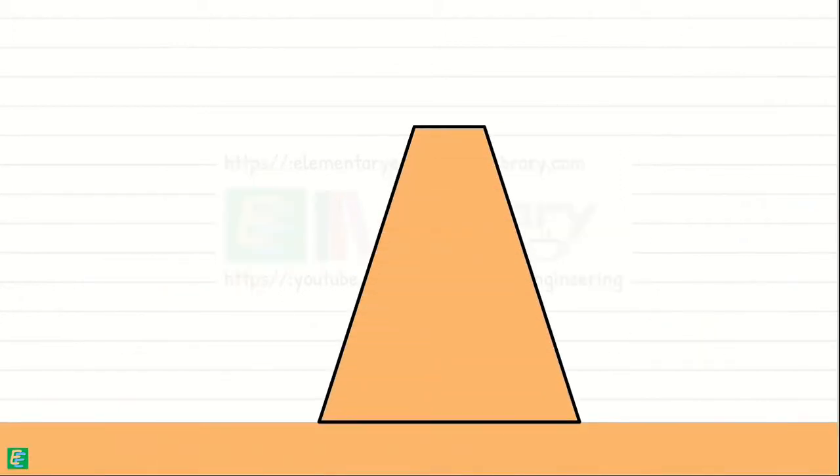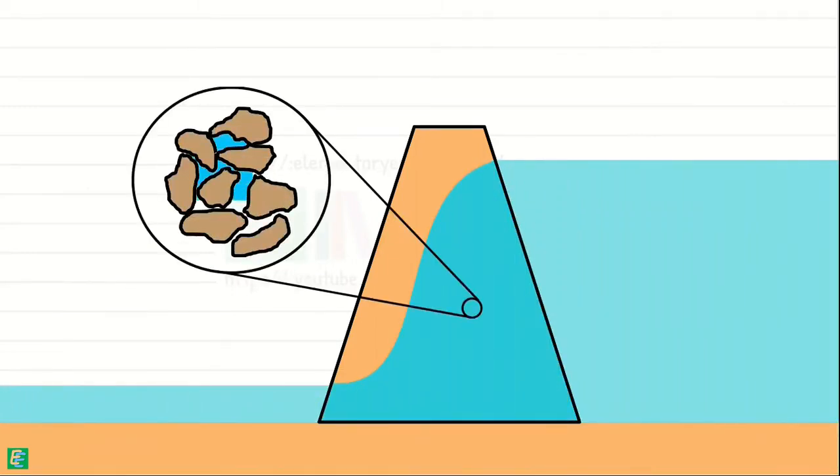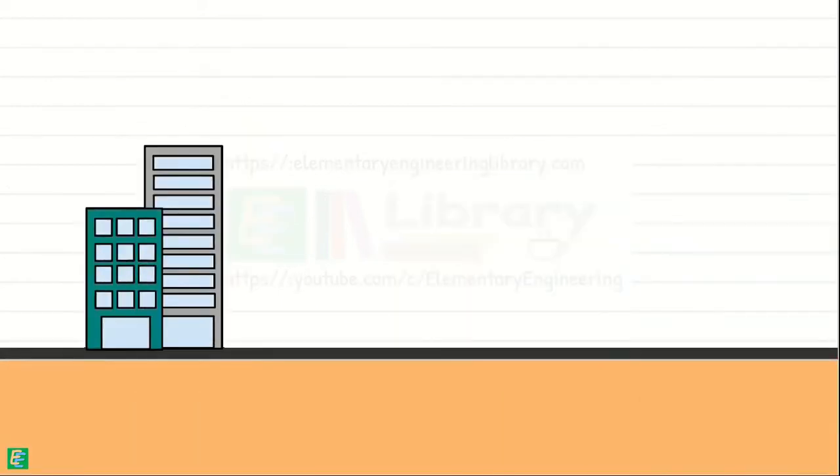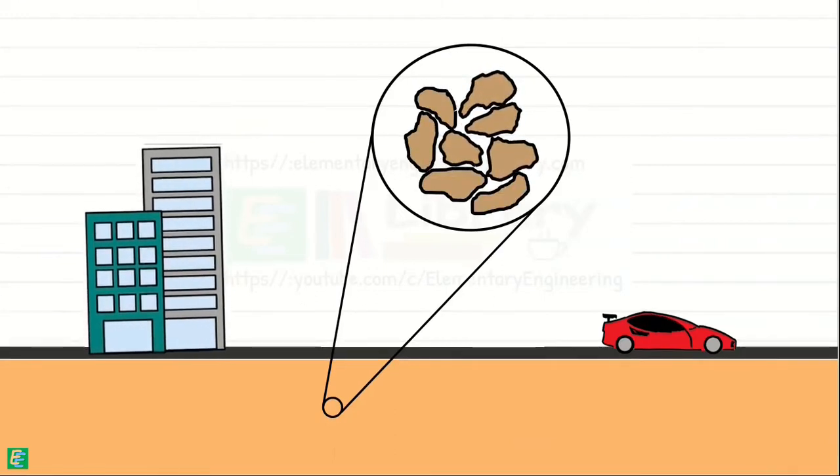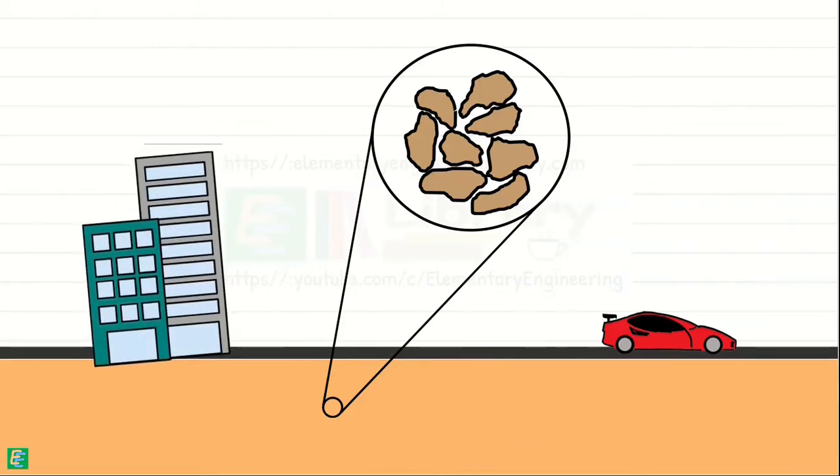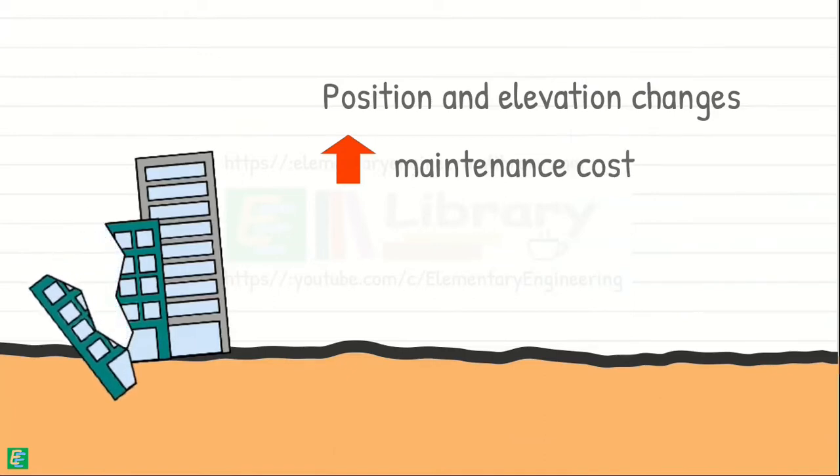In case of dams, huge amounts of water may percolate through these voids out of the dam, while in case of roads or buildings, weight of running vehicles and weight of building itself may cause the soil pores to shrink and that may result in undesired settlement of the structure. The position and the elevation of the structure changes, which increases unnecessary maintenance cost and sometimes it may even lead to structural failure.